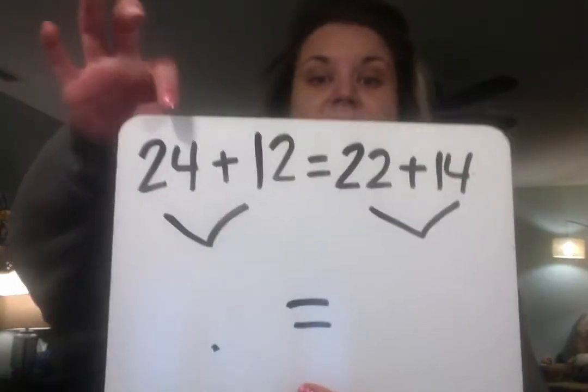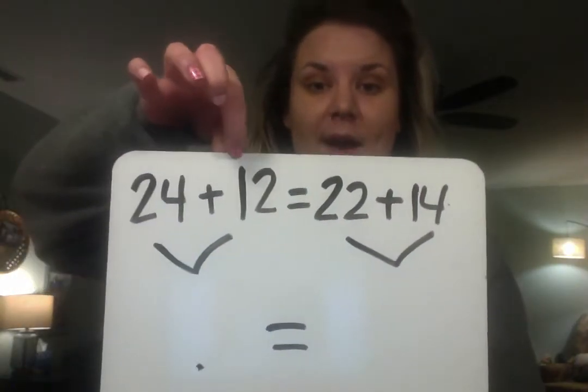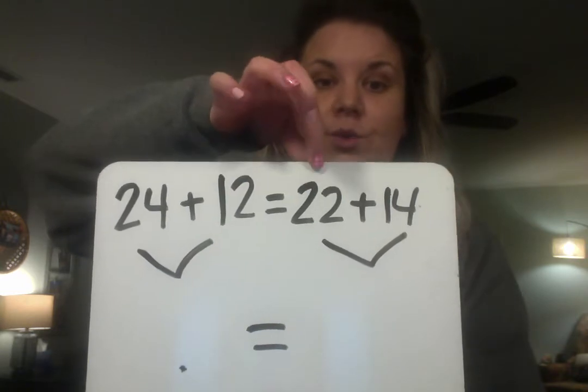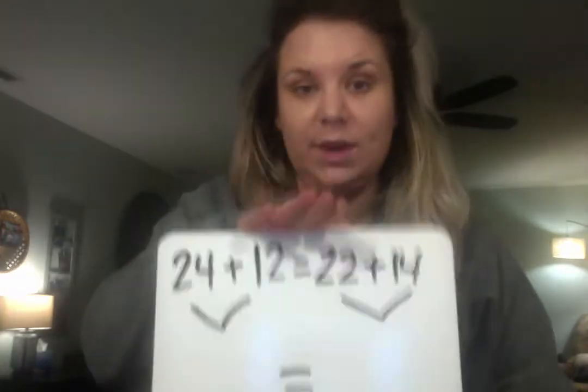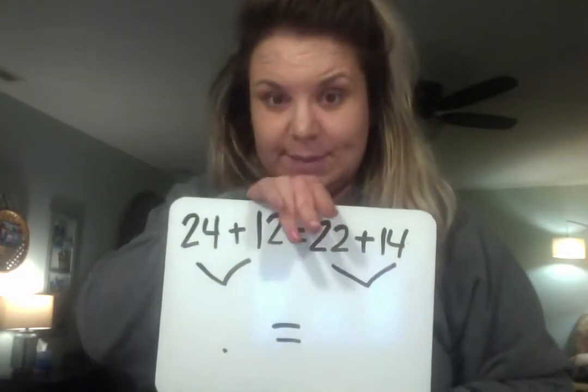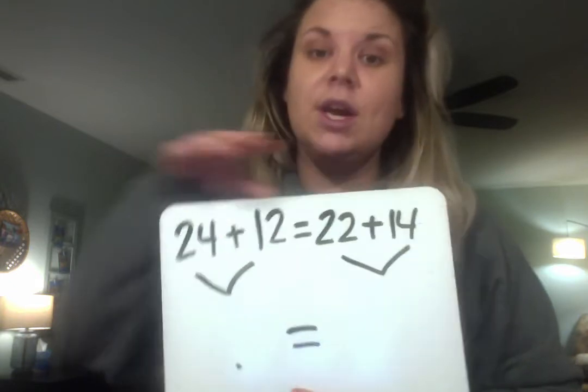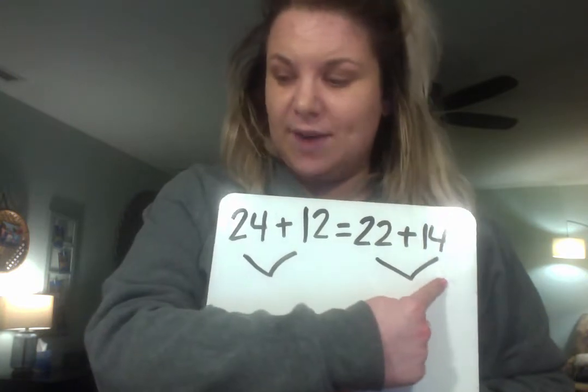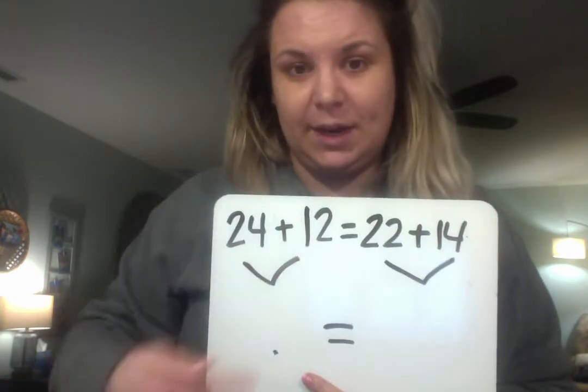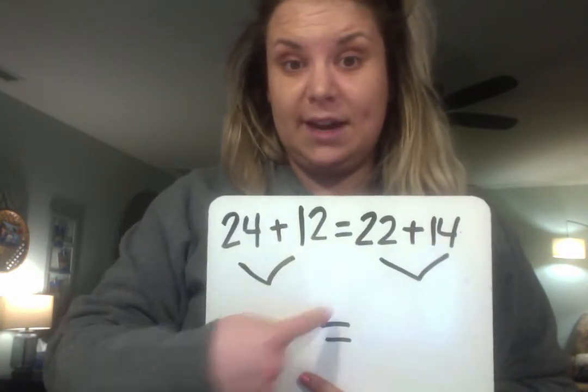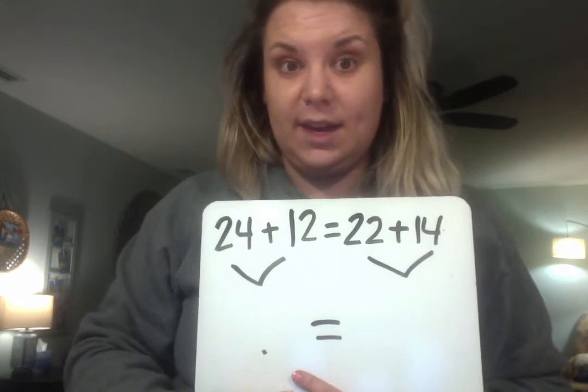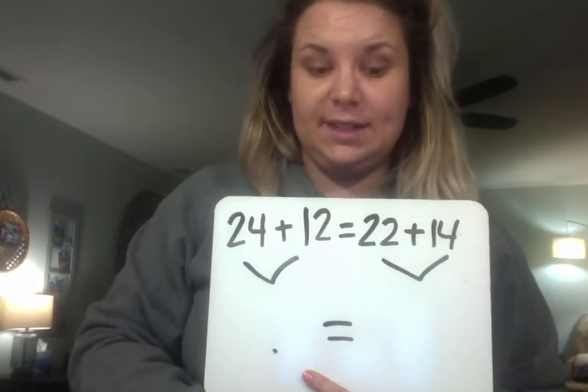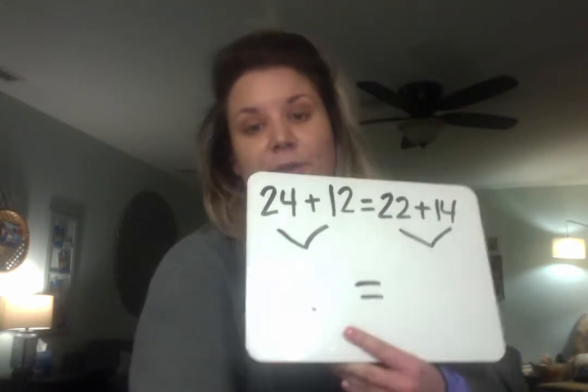So I set up a big equation. Are you ready? I have 24 plus 12 equals 22 plus 14. And we need to find out if that's true, if it's balanced or unbalanced. So I went ahead, just to remind you, I like to draw these little arrows called the carrots. You don't have to. It helps me stay organized. You do have to carry down your equal sign so that you can fill it in at the end if it's equal or if it needs a slash through it. So let's work through this together.